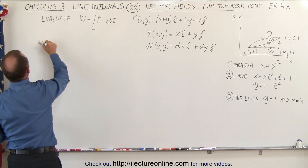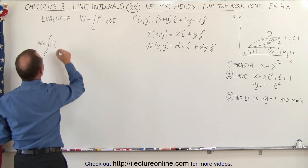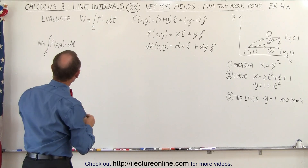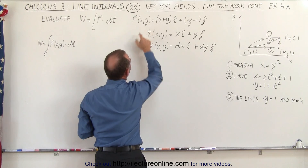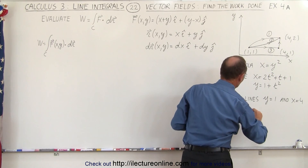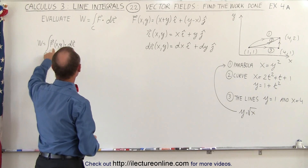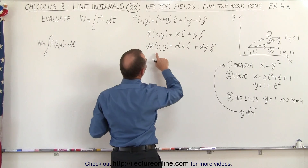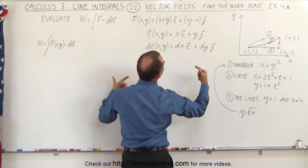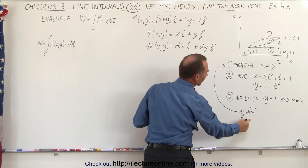The work done is equal to the integral over the curve of the force vector dotted with the derivative of the position vector. The force vector is in terms of x and y, but we have a relationship between x and y — namely y equals the square root of x — for case number one, the parabola. So instead of expressing the force in mixed terms, we want the first component only in terms of x and the second only in terms of y, using that relationship.